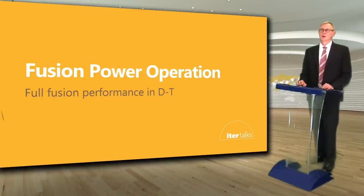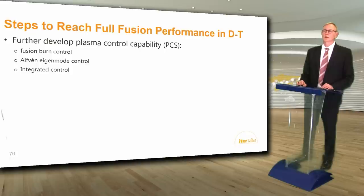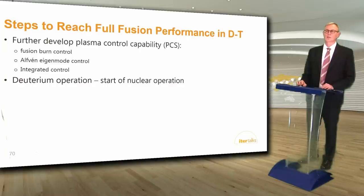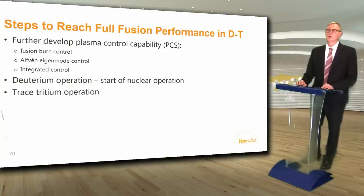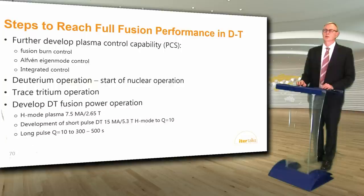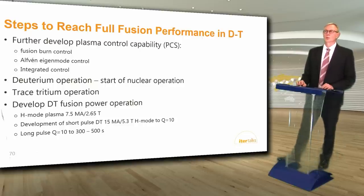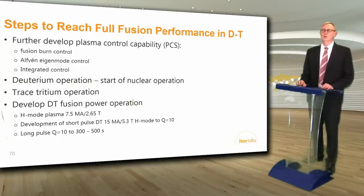Then we will have all systems ready to begin fusion power operation to achieve full fusion performance in deuterium-tritium. The steps to reach full fusion performance in DT are to further develop plasma control capability for fusion burn control, alpha-particle eigenmode control, and fully integrated control. Deuterium operation will start the nuclear operation phase, followed by trace tritium operation to ensure effective tritium procedures and measure initial transport, fusion power, and confinement changes. Then the tritium concentration will be increased up to a 50-50 DT ratio to maximize fusion power. The DT scenarios will include H-mode at 7.5 megamps and 2.65 tesla and short pulse DT H-modes at 15 megamps and 5.3 tesla up to Q equals 10, followed by long pulse Q equals 10 DT fusion burn up to 300 to 500 seconds.